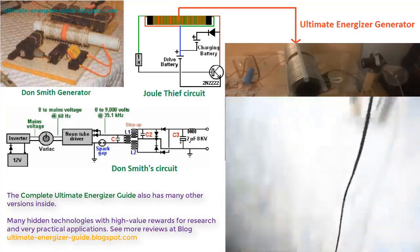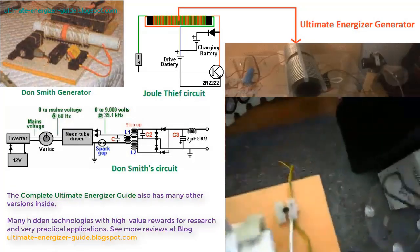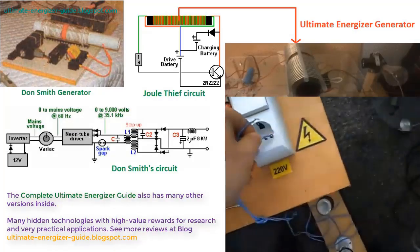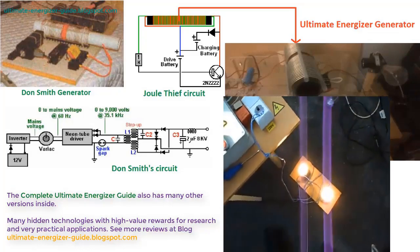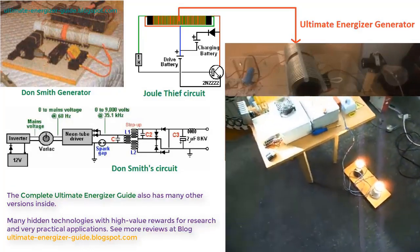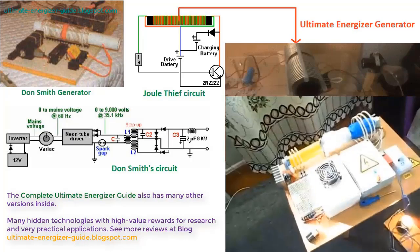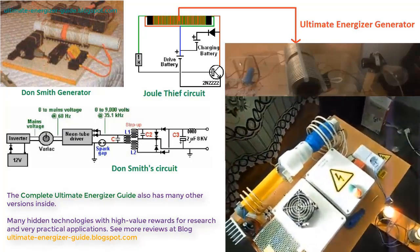The Joule Thief circuit and Don Smith's circuit, although capable of producing output energy greater than input energy, are primarily intended for free energy researchers. Those who demonstrate these circuits often do not share the secrets of generating electricity to power household appliances.